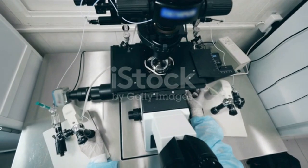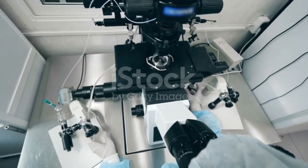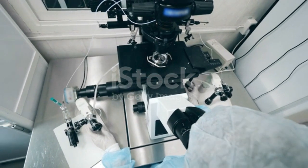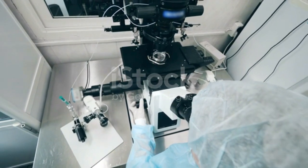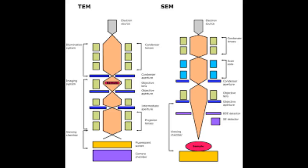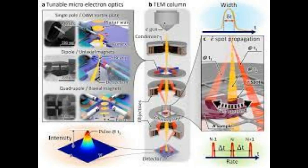1. The Basics of Electron Microscopy. An overview of the fundamental principles of electron microscopy, highlighting how it differs from traditional light microscopy. This introduces the concept of using electron beams instead of light to achieve higher resolution.